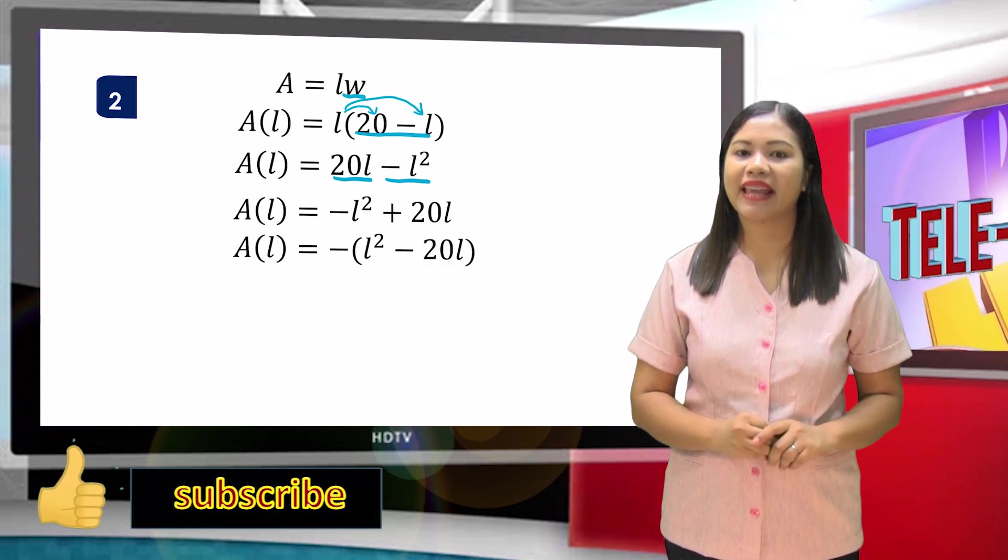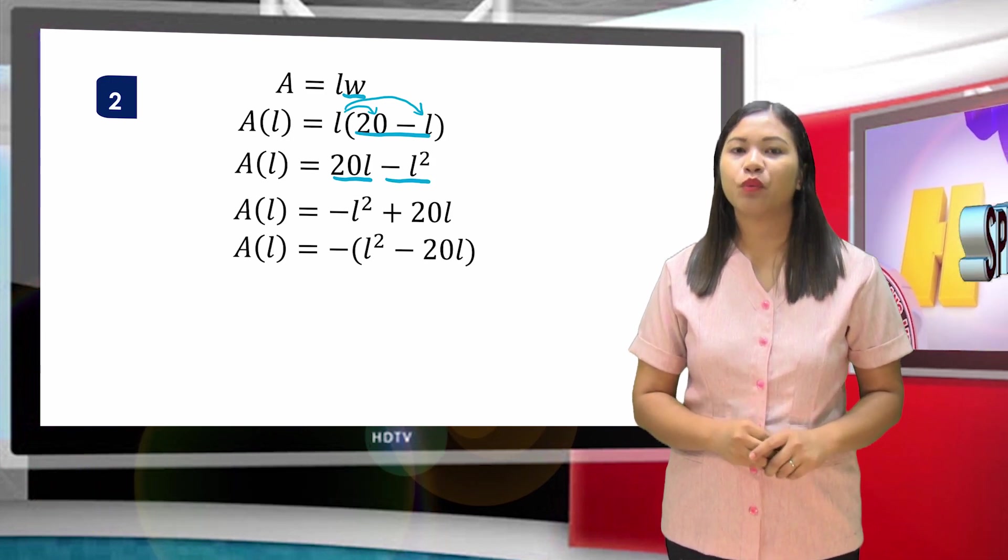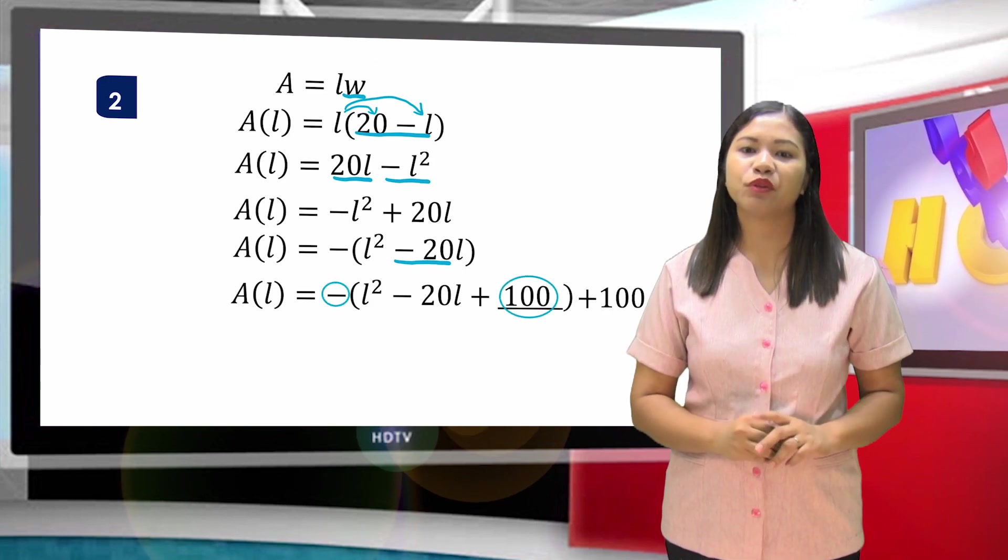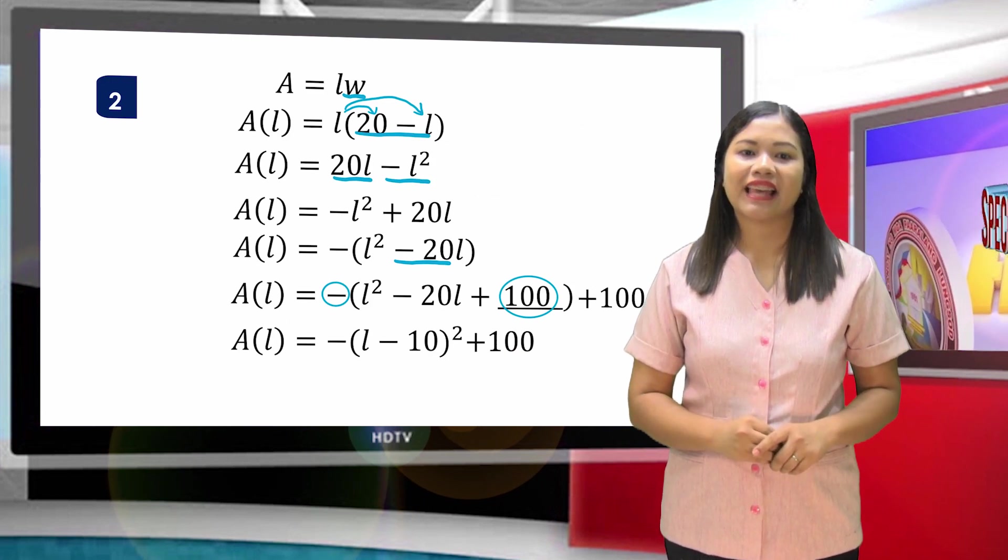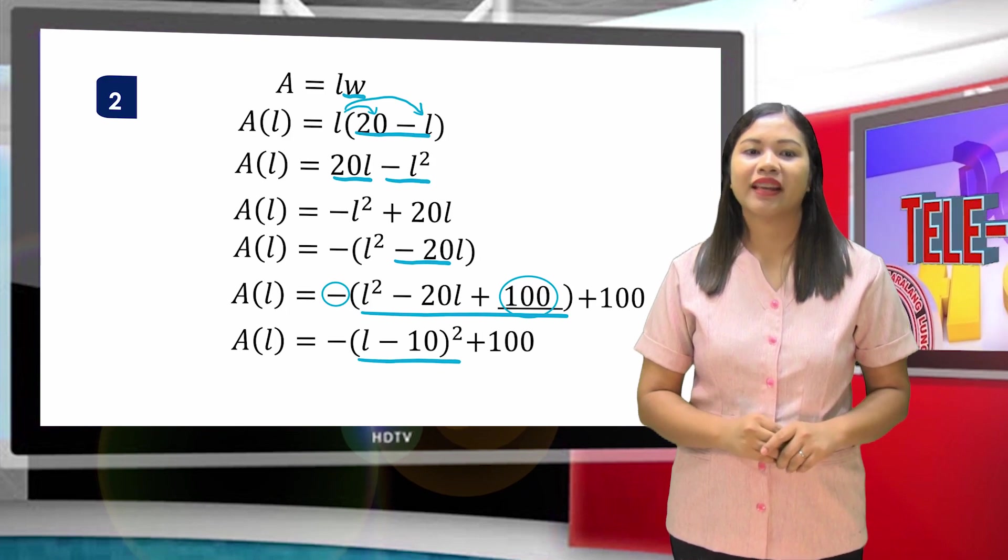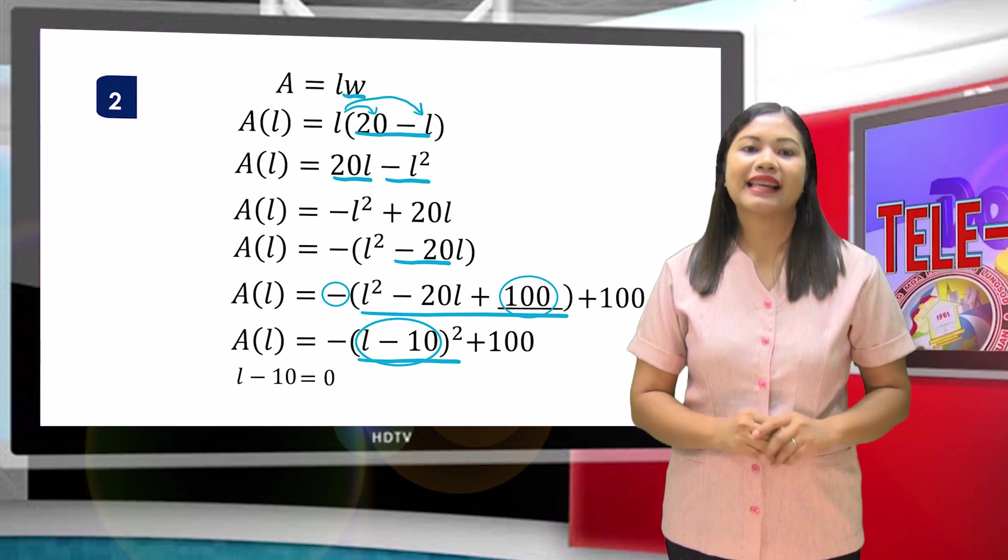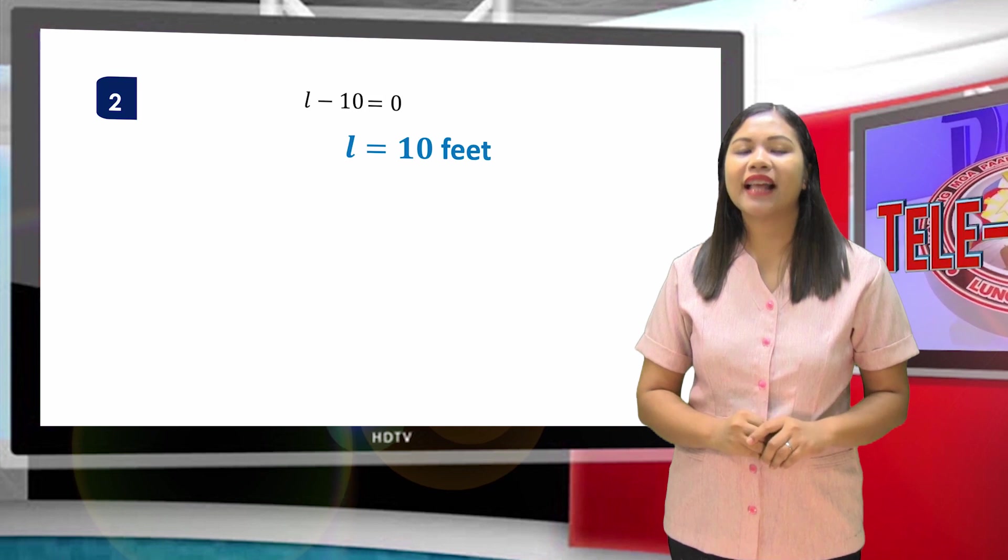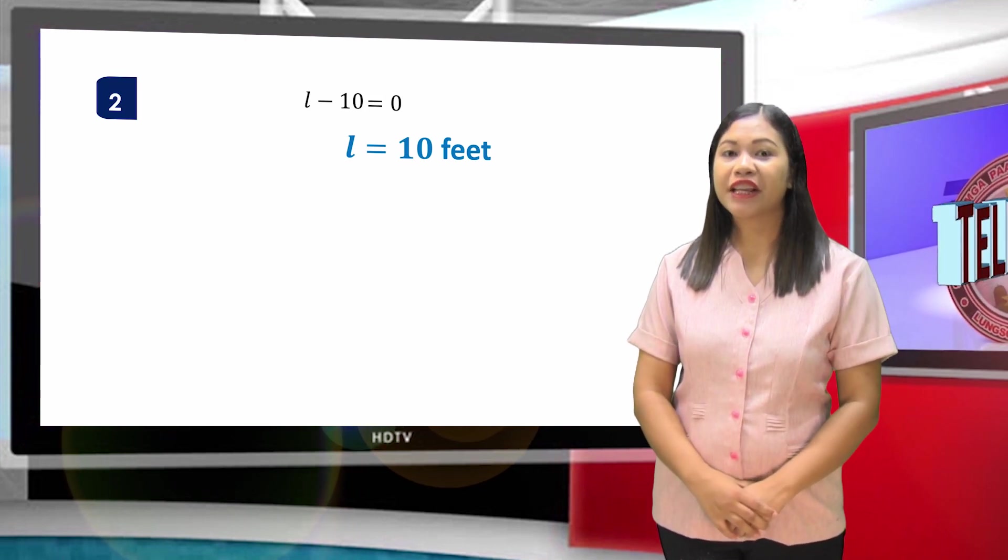Complete the perfect square by getting half of negative 20, and then square it. We have 100. But since we added negative 100, we have to add 100 so that we will not change the original equation. Express this into square of a binomial. Here's what we need. Equate this into 0. So L = 10.